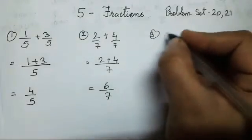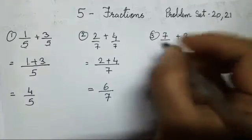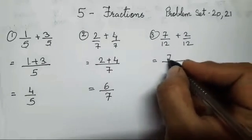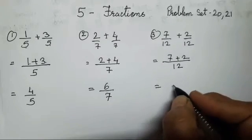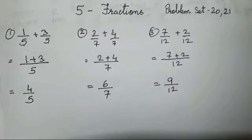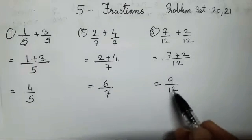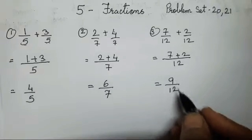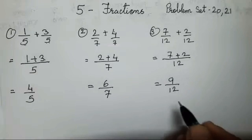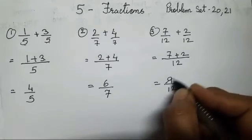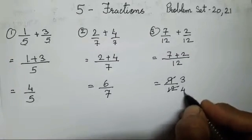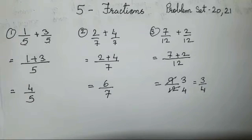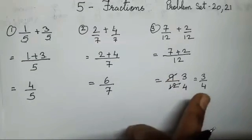The third sum is 7 upon 12 plus 2 upon 12. The denominators are equal, so let's write it once. 7 plus 2 is 9 upon 12. Now over here, you all have to watch whether it can be reduced — both numbers should come in one single table. They come in the table of 3: 3 threes are 9, 3 fours are 12. So your answer is 3 upon 4. It's very easy but remember the numbers should come in one single table.